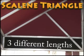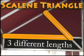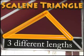Our second triangle is formed by the metal supports of a canopy. Notice it is a scalene triangle because all three sides have different lengths.